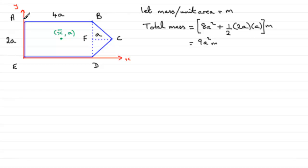Now we're going to take moments about this edge here, AE. So moments about the edge AE. And that means that we're looking at the moment of the total mass about AE, and it's going to equal the sum of the individual moments of each of these shapes about AE.